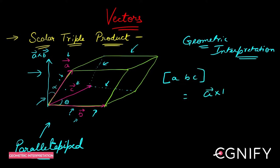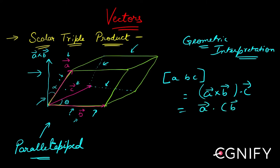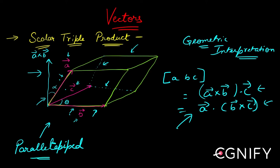The box product is a-bar cross b-bar dot c-bar. I can also write this as a-bar dot (b cross c) — either form is valid. Let's use the expression a dot (b cross c) to understand this geometrically.